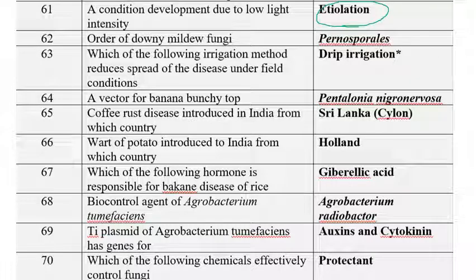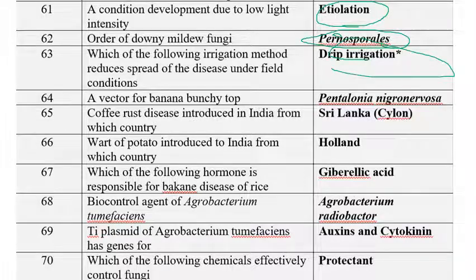The order of downy mildew fungi is Peronosporales. The irrigation method that reduces the spread of disease under field conditions is drip irrigation, as it manages the flow of water between fields and controls soilborne diseases. The vector for banana bunchy top is Pentalonia nigronervosa, the black aphid. Katte disease of cardamom is also transmitted by the black aphid, Pentalonia nigronervosa.